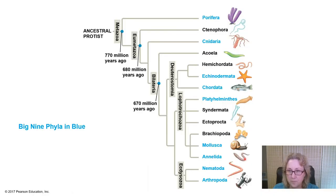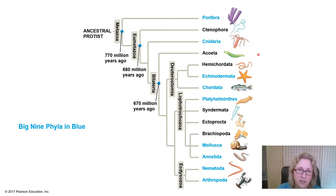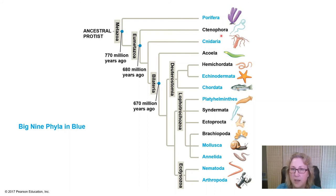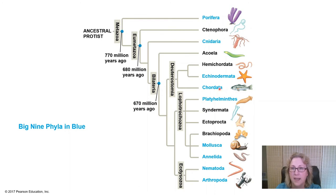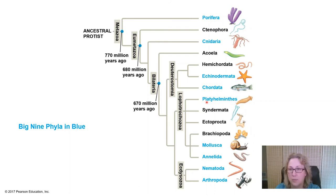Here are the Big Nine phyla: Porifera (sponges); Cnidaria (sea jellies and hydra — also a large phylum with many species); Echinodermata, which includes starfish and sea urchins — many of those embryos shown earlier are sea urchin embryos; Chordata (our phylum); Platyhelminthes (flatworms) — literally meaning 'flatworm' in Greek, with platy meaning flat and helminth meaning worm.